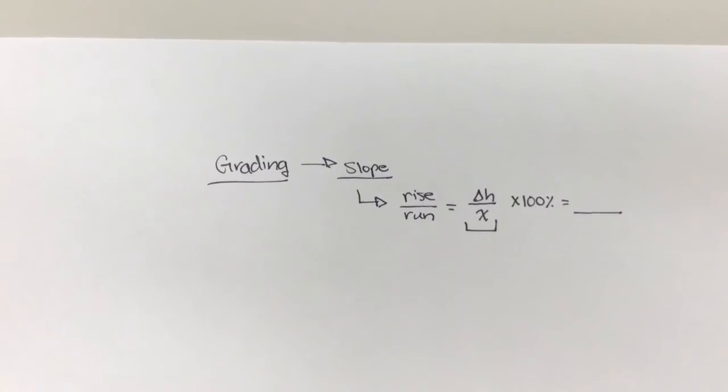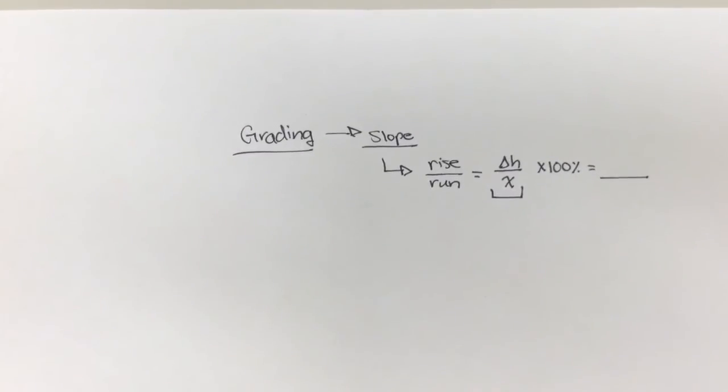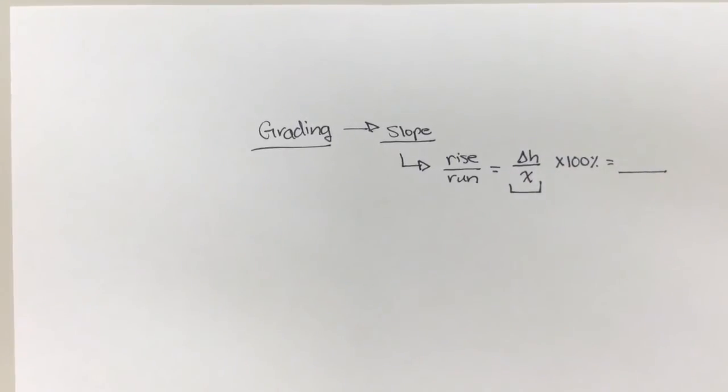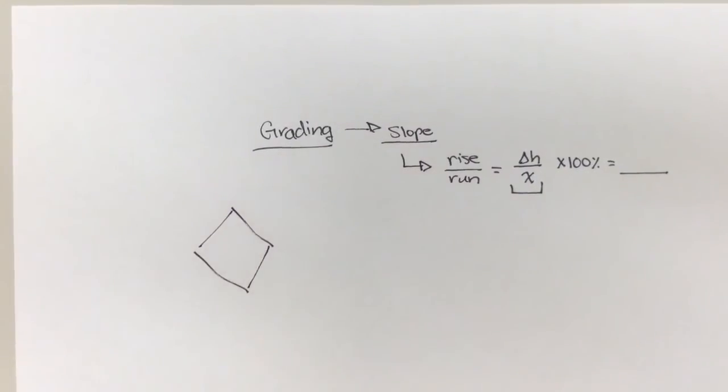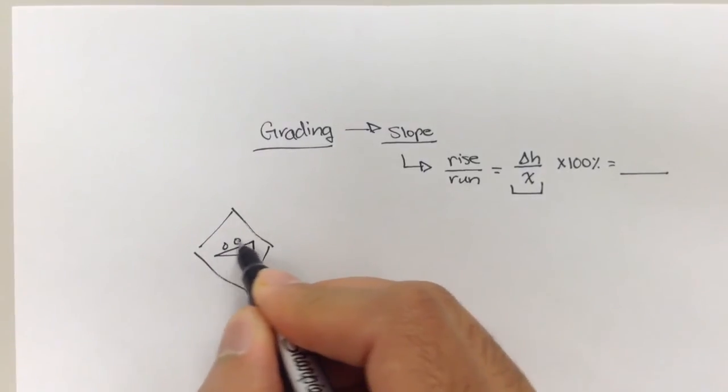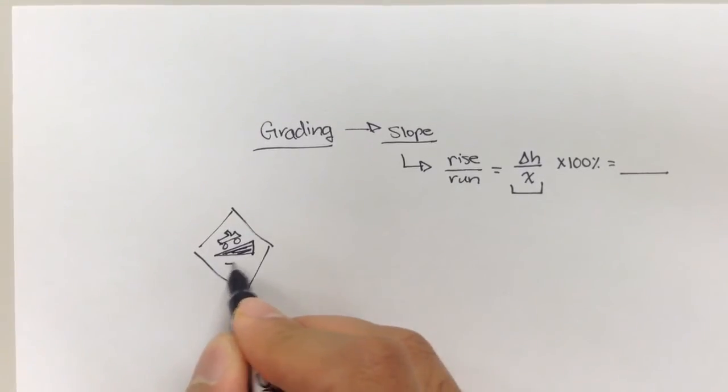Right. So in the real world, or at least here in the United States, if you ever drive in very mountainous areas that have a lot of hills, you may see a sign that looks something like this. And please excuse my drawing abilities. You have this yellow sign, and there's this triangle here, and there's usually like a little car or a truck or something. And it says 7% grade.